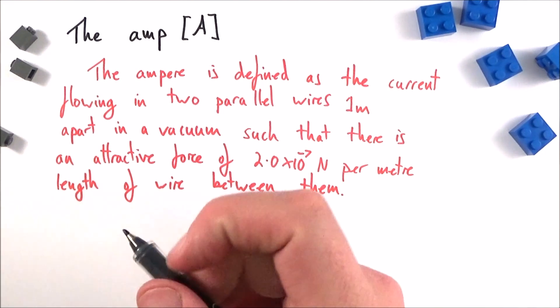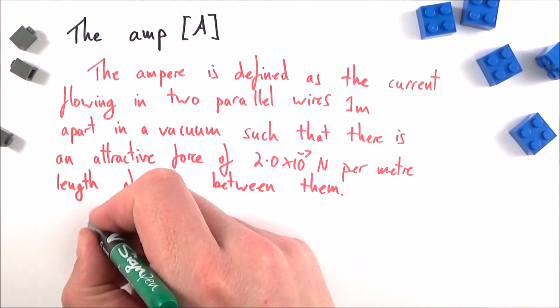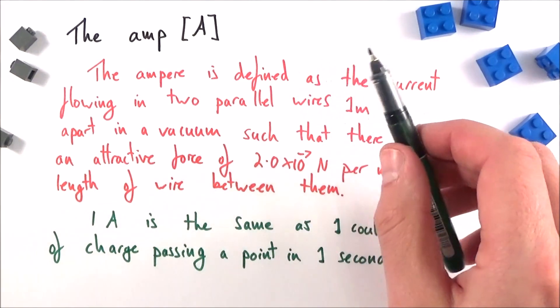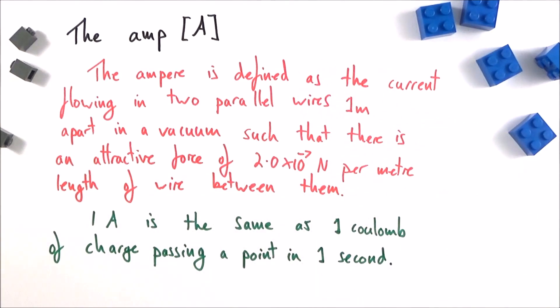Maybe a better way to think about what one amp actually is: basically one amp is the same as one coulomb of charge passing a point in one second. And again, this means we need to look at the coulomb and what that actually truly is, and this video up here all about charge will help you understand that in a bit more detail.